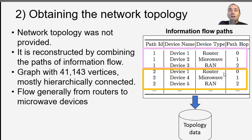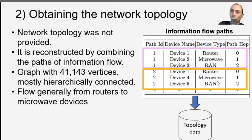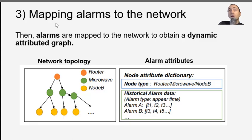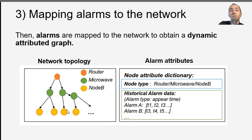After pre-processing, if we don't have the topology of the network, we can recover the topology from messages that have been exchanged on the network — we have the information flow between devices and can recover the topology from that. In this study we have a graph with 41,000 vertices, which means a lot of network devices. Then we map the alarms to this topology to get the dynamic attributed graph, which looks a little bit like a tree, with alarms and timestamps for each device.